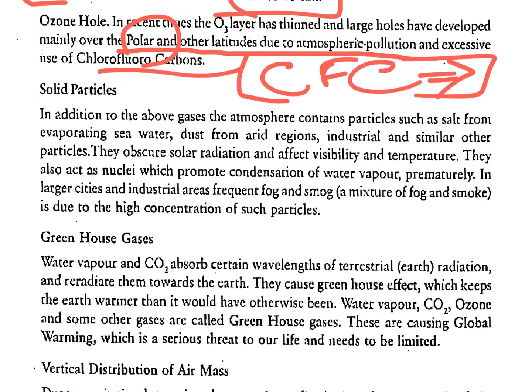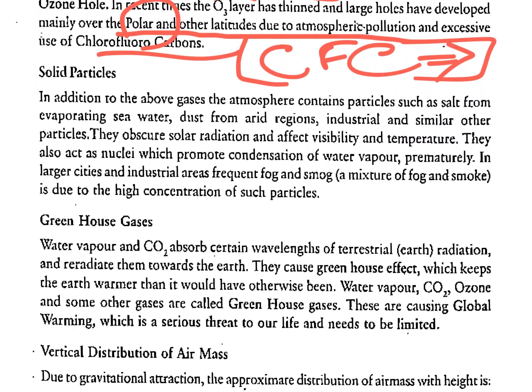In addition to gases, the atmosphere contains solid particles such as salt from sea water, dust from arid regions, and industrial particles. They obscure solar radiation, affect visibility and temperature, and also act as condensation nuclei. In large cities and industrial areas, frequent fog and smoke — a mixture called smog — occur due to high concentration of such particles.